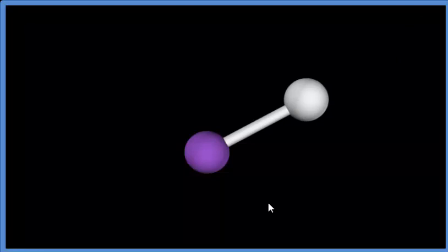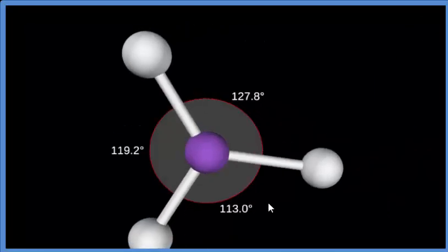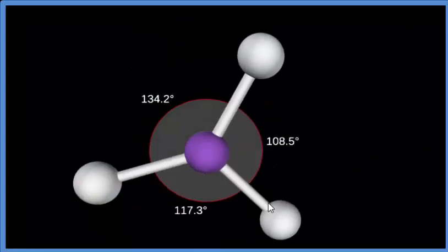So let's imagine this is our central bromine atom here, and we're going to add those three fluorine atoms, one, two, they spread out, three. So they're spread out as far away from each other as they can.